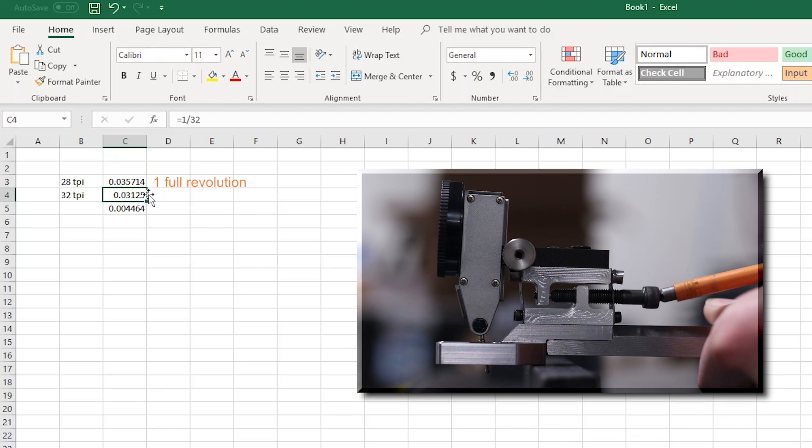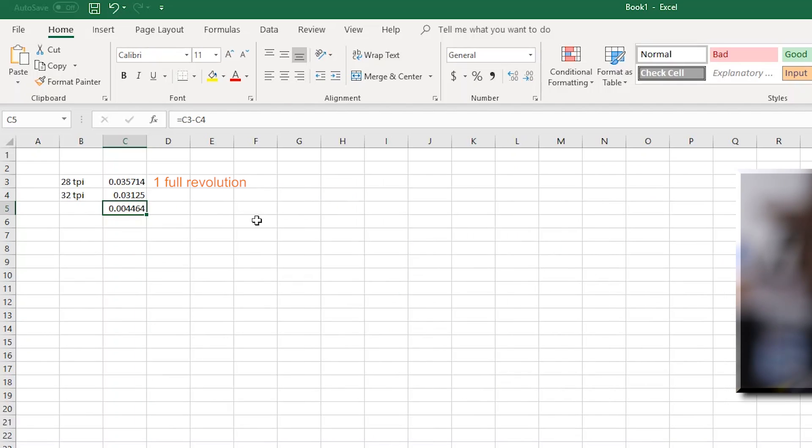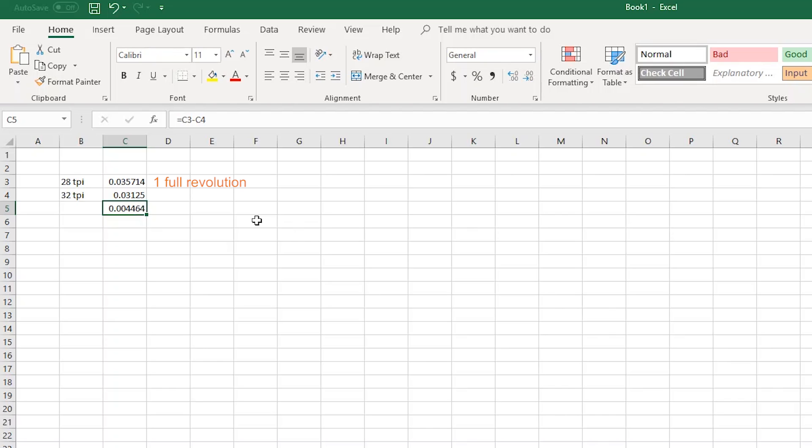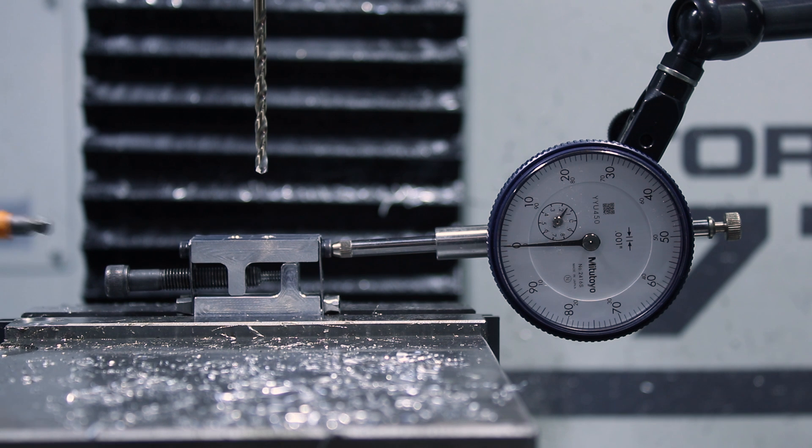That gives us about four thousandths of movement per revolution of that quarter 28 screw which is much less than the 36 thou that we originally had. This is also convenient because that about four thou is going to give us roughly one thousandth of an inch per quarter turn and makes it more convenient for indicating because you know that every quarter turn is going to be almost exactly one thou.